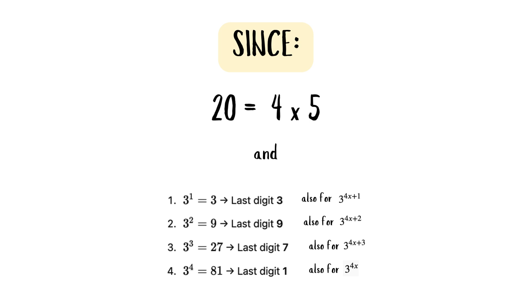So this is for 3 raised to the power of 4x plus 1. The second one, which has last digit 9, would also work for 3 to the power of 4x plus 2, and so on, meaning the last digit being 1 works for 3 raised to the power of 4x.